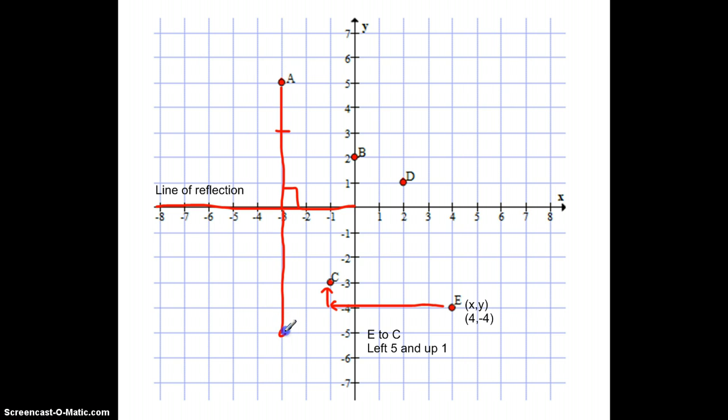Our new point, and I'm going to label it A prime, is going to be the same distance from the line of reflection to A as from the line of reflection to A prime. So the point is the exact same distance on both, and the line of reflection is the key part here.